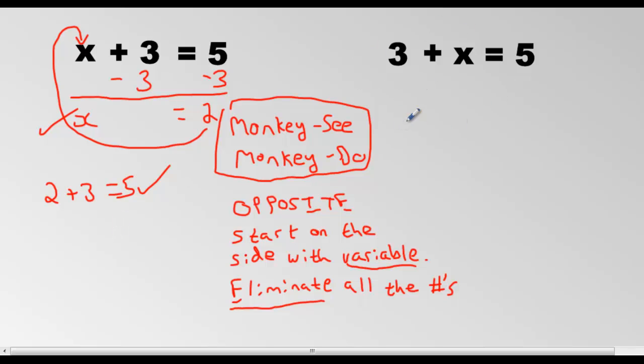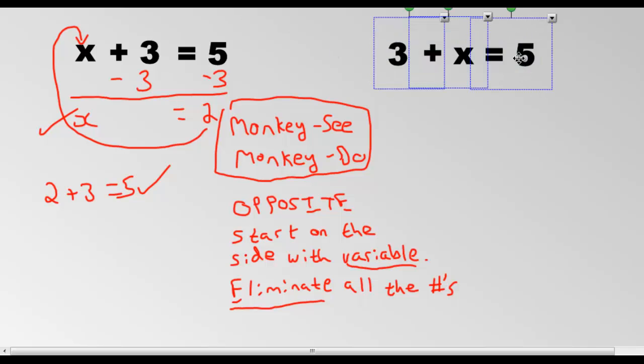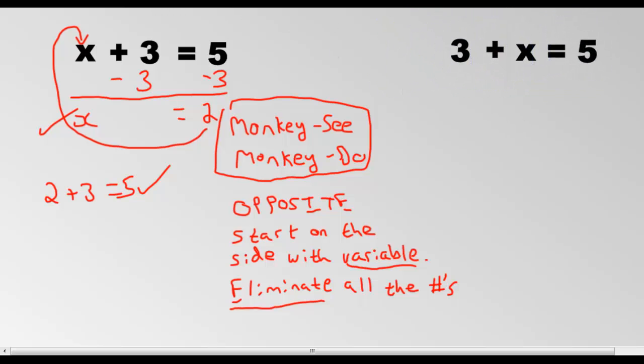But how do we do it on this side? Because the order has been messed around with. It is no different. All you do is you start on the variable side and you say, look at that 3. We need to kill them off. We need to clash and clan them. So we have a 3 here. How do we kill a 3? We put a minus 3. Because that is by default a positive 3. We kill it by a minus 3.